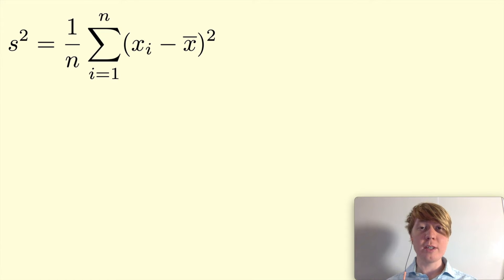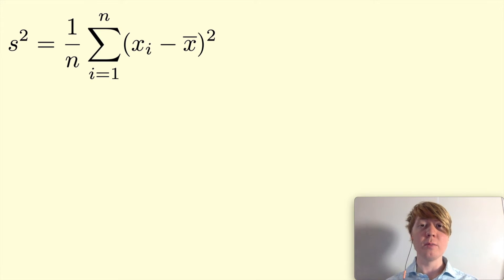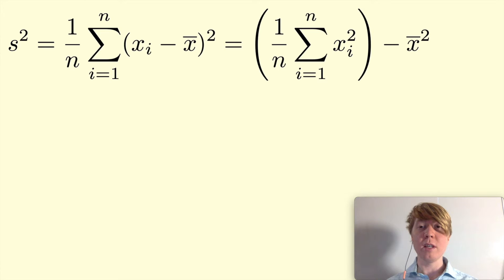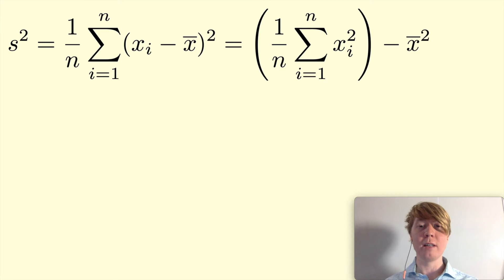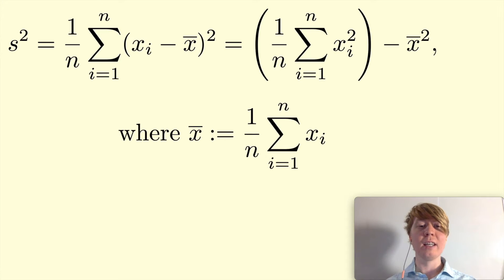We're going to have a look at a few different formulas for the sample variance of a data set. Here we've just got the most basic formula where it's your average squared difference between your data points and the sample mean. A little bit of algebraic manipulation will show that this is also equal to the familiar form where you find the average squared value of all your data points and then subtract the sample mean squared. Here x-bar is the sample mean as usual.